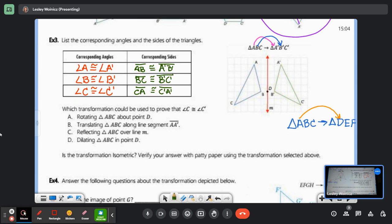Looking at our picture, which of these transformations could be used to prove that angle C is congruent to angle C prime? Rotating it about point D, translating it along the line segment, reflecting triangle ABC over line M, or dilating triangle ABC in point B? C, correct. If I were to bend this paper in half and fold it on that line, it would map onto each other. So I know it's a reflection in line M.